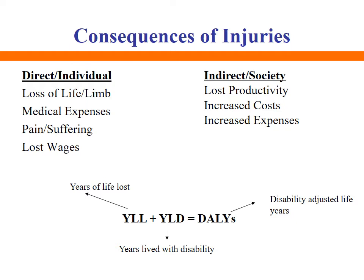The consequences of injuries include direct consequences to the individual and indirect consequences to society. For the individual, these are loss of life, increased medical expenses, pain, suffering, and lost wages. For society, there is loss of productivity as the earning member is unable to work, and increased overall costs. Another way to measure the consequence of injury is through DALYs, which combine years of life lost and years lived with disability; one DALY equals one healthy year of life lost.